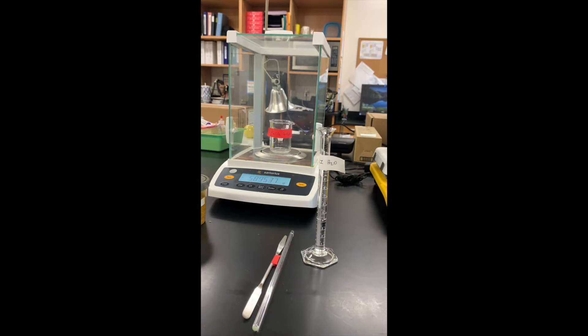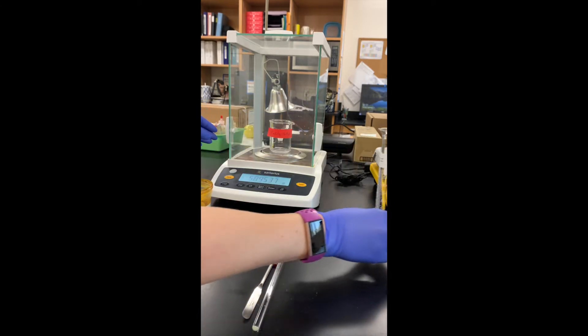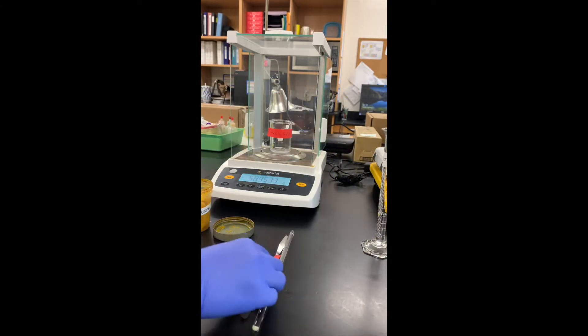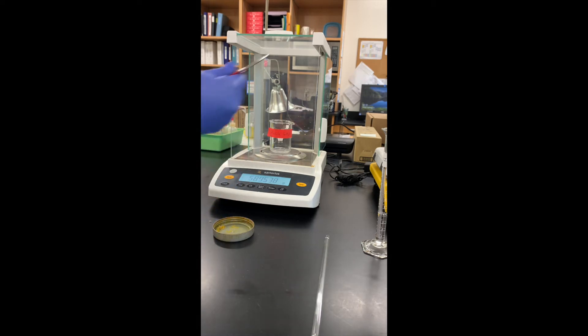I will first add roughly 1.3 grams of iron chloride hexahydrate to a clean, pre-weighed beaker. I will subtract this mass with that of the empty beaker to obtain the weight of material added.